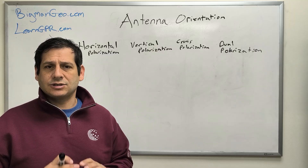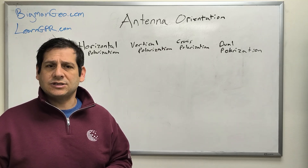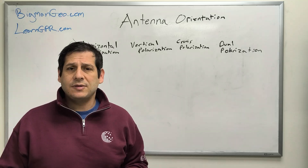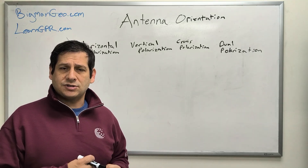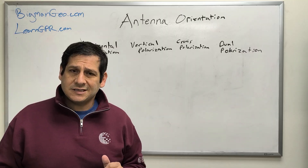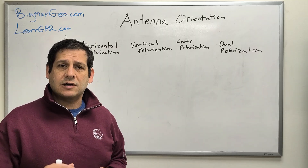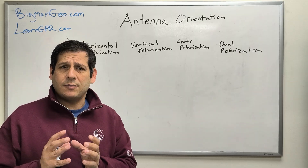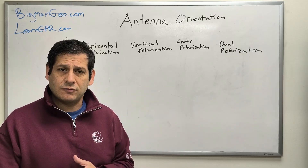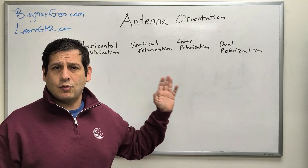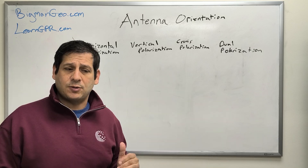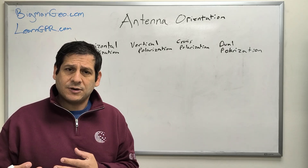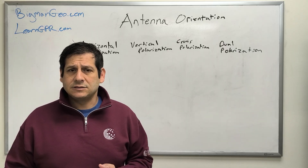I want to discuss antenna orientation because there's some confusion around this in some of the conversations I've had recently with folks, specifically regarding what cross-polarization means. This term has now been used quite often in the GPR space, primarily with systems that are built for concrete scanning to locate and detect embedments in concrete. Systems are now coming out that are tagged as cross-polarized, and I want to get into what the terminology means, what it actually means, is it really cross-polarized, how it's being used, and is it useful?